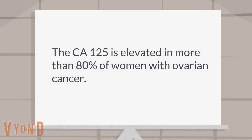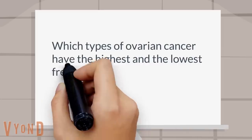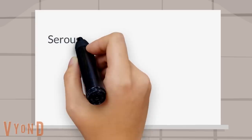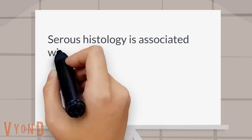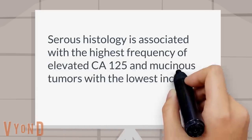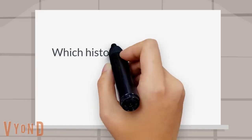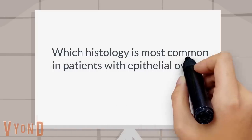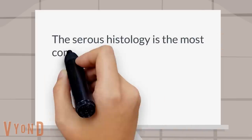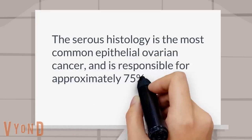Which types of ovarian cancer have the highest and the lowest frequency of being associated with an elevated CA-125? Serous histology is associated with the highest frequency of elevated CA-125, and mucinous tumors have the lowest incidence of associated elevated CA-125. Which histology is most common in patients with epithelial ovarian cancer? Serous histology is the most common epithelial ovarian cancer, responsible for approximately 75 percent of ovarian cancers.